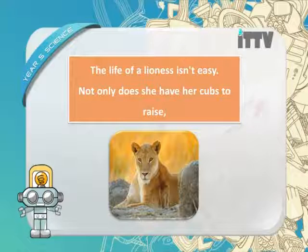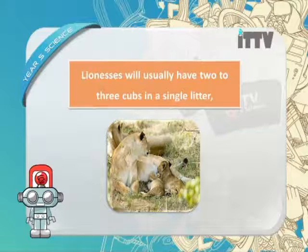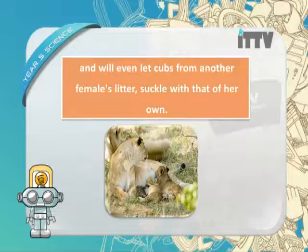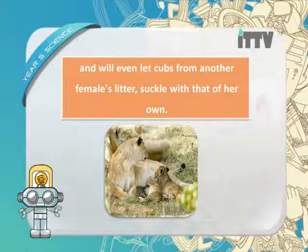The life of a lioness isn't easy. Not only does she have her cubs to raise, but she and the other females do up to 90 percent of the hunting for the entire pride. Lionesses will usually have two to three cubs in a single litter. They will even let cubs from another female suckle with their own — so lionesses are not selfish when raising their young.